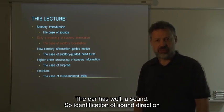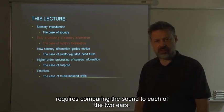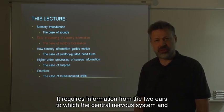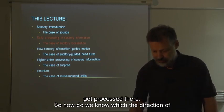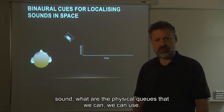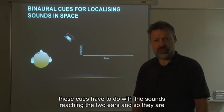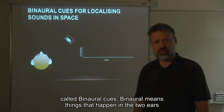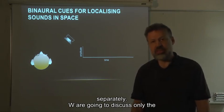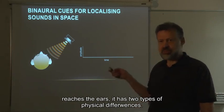Identification of sound direction requires comparing the sounds that reach the two ears. Therefore, auditory localization requires computation — it requires information from the two ears to reach the central nervous system and get processed there. So how do we know the direction of a sound? What are the physical cues we can use to identify the direction of a sound source? These cues have to do with sounds reaching the two ears, and so they are called binaural cues. We are going to discuss the localization of pure sine waves, pure frequencies.